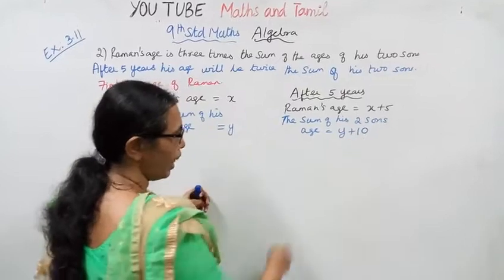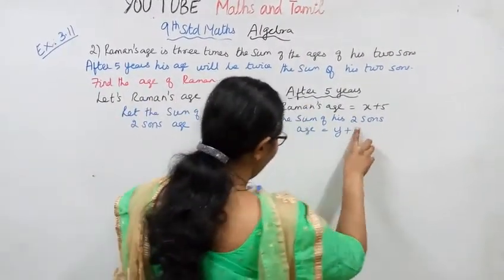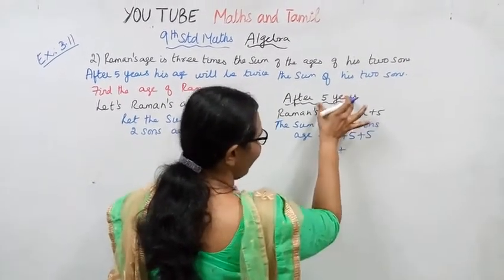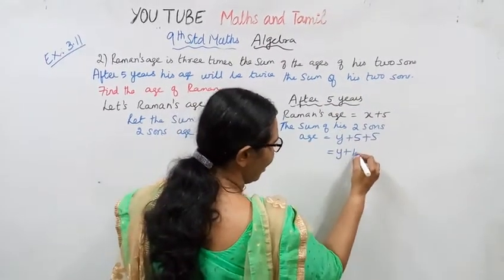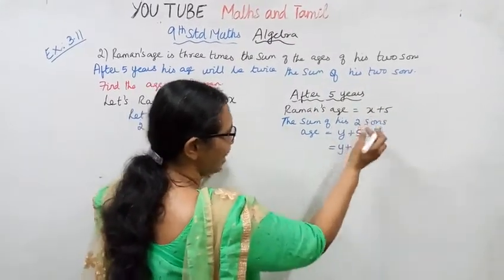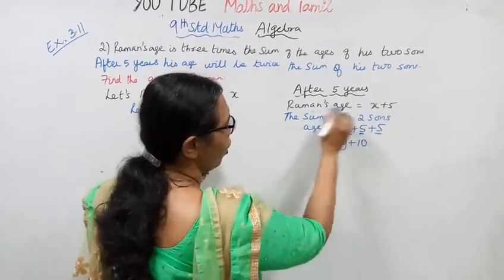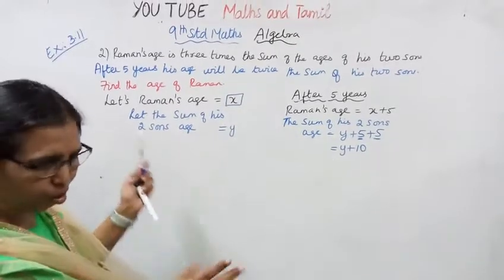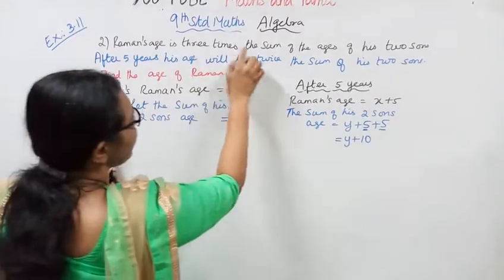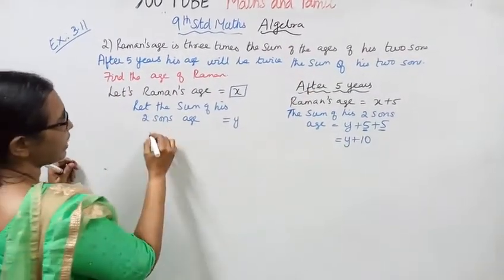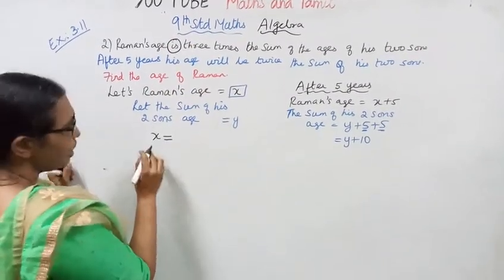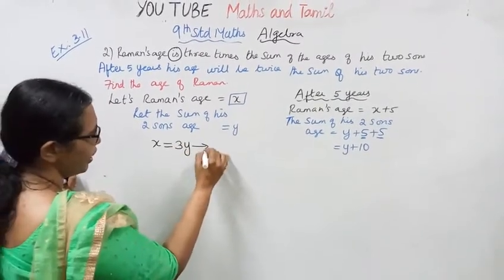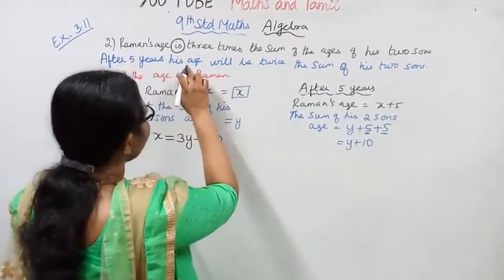After 5 years, the sum of his two sons' age becomes y plus 10. Raman's age becomes x plus 5. Now, Raman's age is 3 times the sum of the ages of his two sons. So x equal to 3y. This is the first equation.